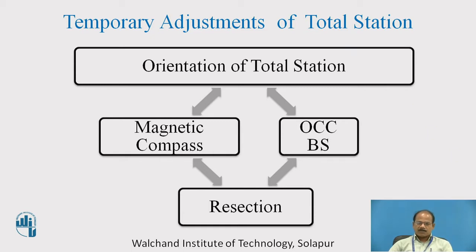In stakeout, some previous work has already been done by the survey party, and therefore extension of that work is possible. If it is the initial setup wherein we are collecting data in the field, it is acceptable to use magnetic compass and OCC-BS setup. OCC stands for Occupied Station and BS stands for Back Sight.